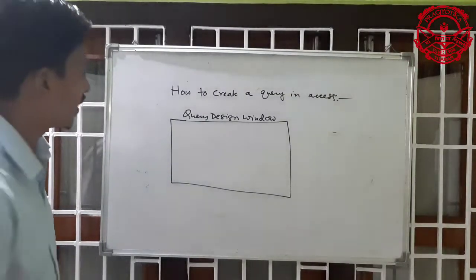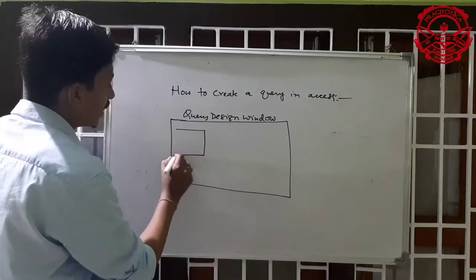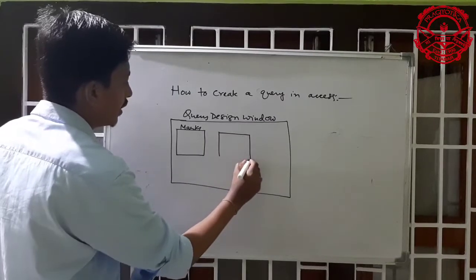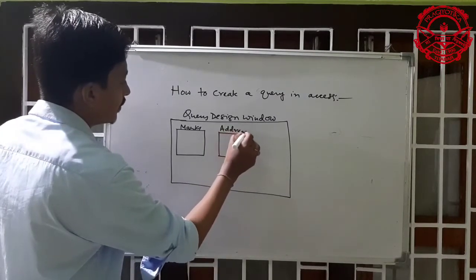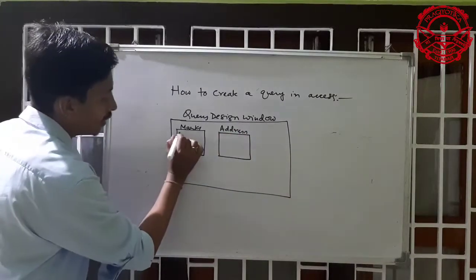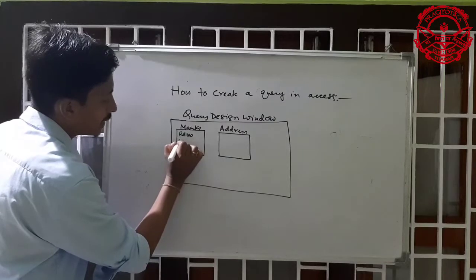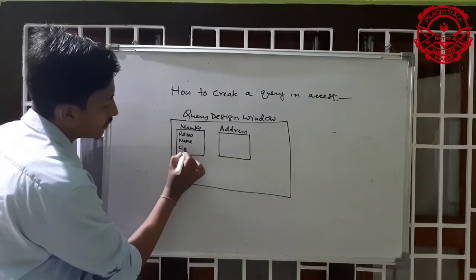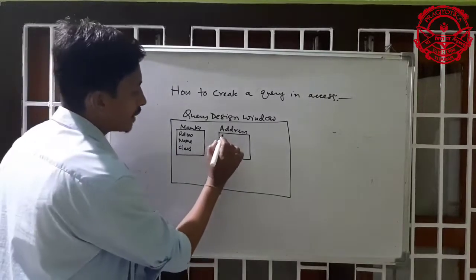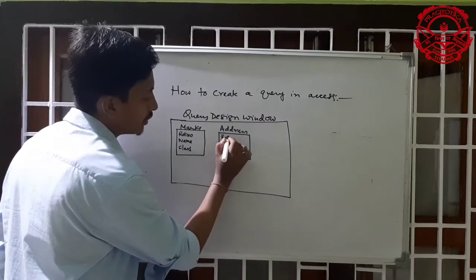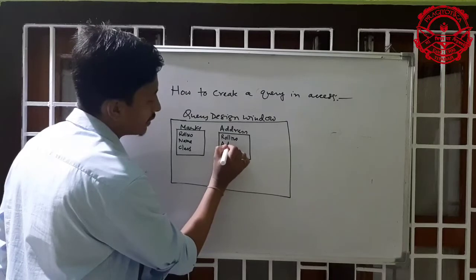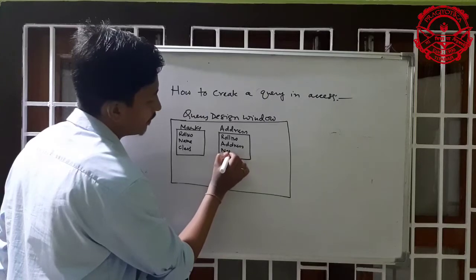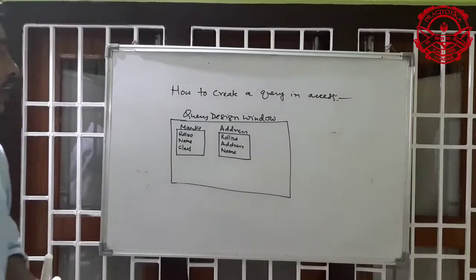In the student table, I have two tables. The first table is the marks table and the second is the address table. In the marks table I have three fields: roll number, name, and class. In the address table I also have three fields: roll number, address, and name.